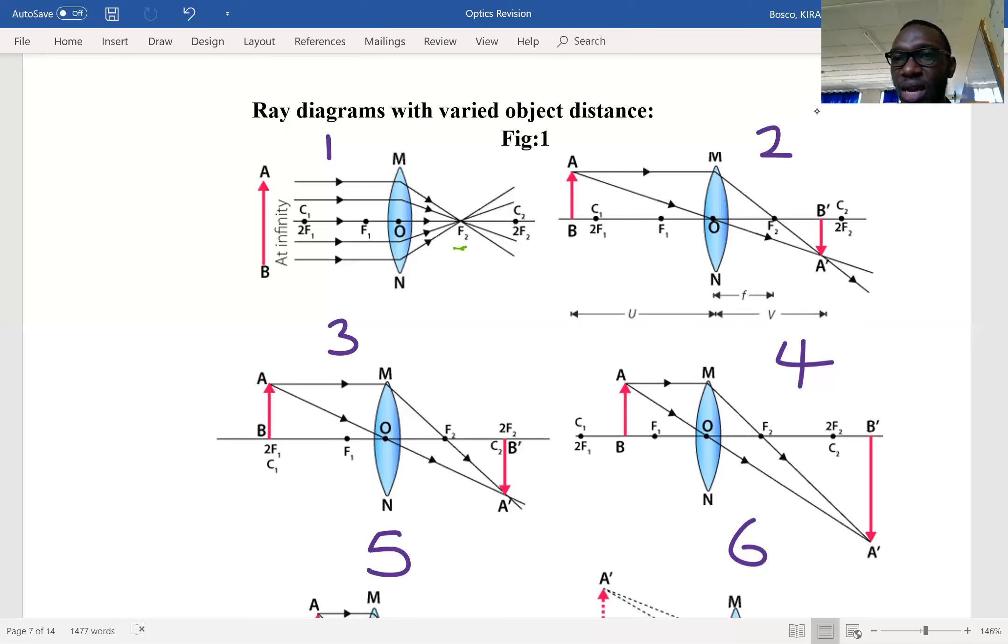Then we have another ray from the top going to the optical center, and where the two rays meet is where the image is. We can see that the object is upright but the image is inverted.